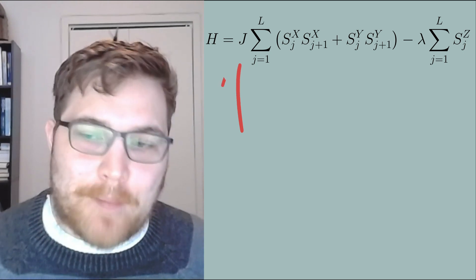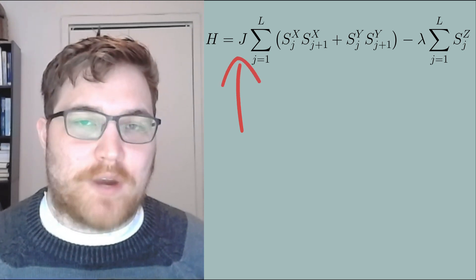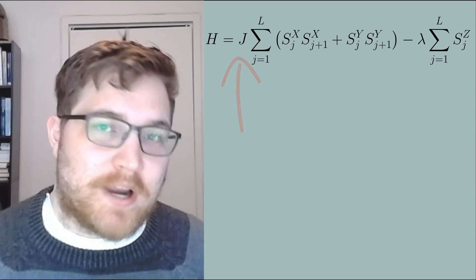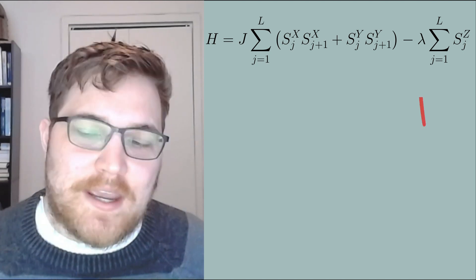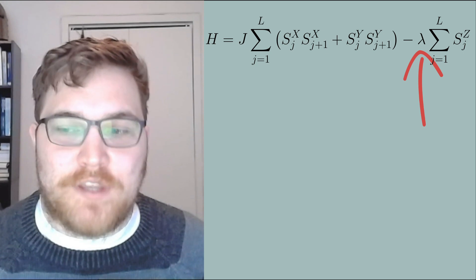The interactions come from nearest neighbor interactions in the x and y directions, and the last sum term is a magnetic field applied to the z direction of the spins. J here controls the strength and type of the interactions we have. It can be either positive or negative, and lambda controls the strength of the magnetic field.